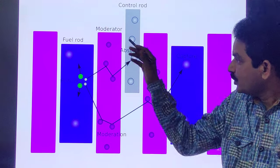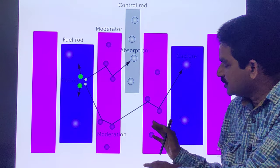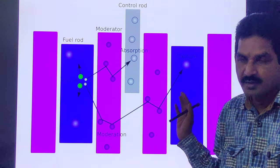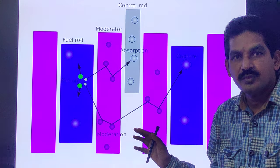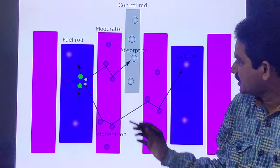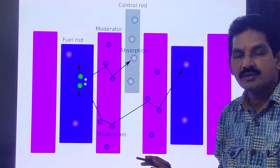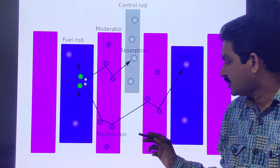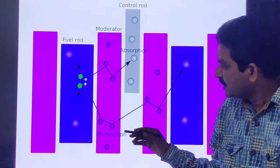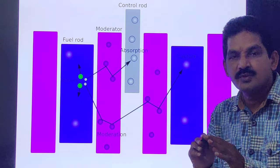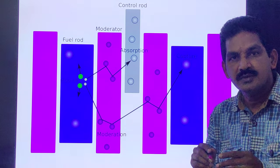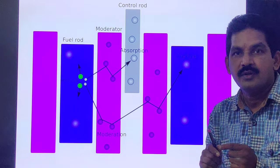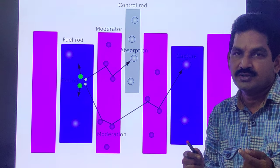Moderators: In any chain reaction, the neutrons produced are fast-moving neutrons. These are less effective in causing fission of uranium-235 and they try to escape from the reactor. It is thus indicated that the speed of these neutrons must be reduced if their effectiveness in carrying out fission is to be increased.